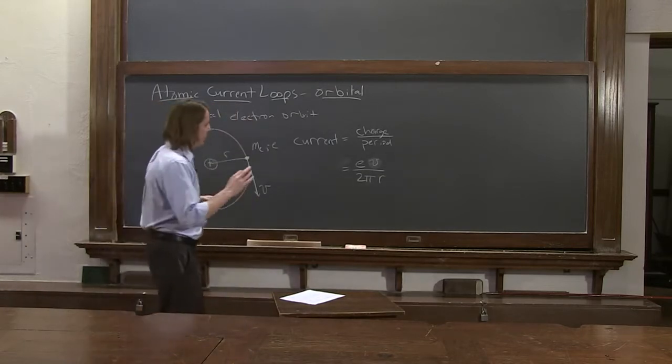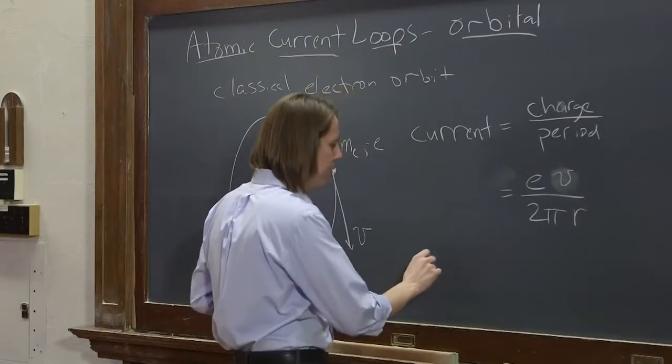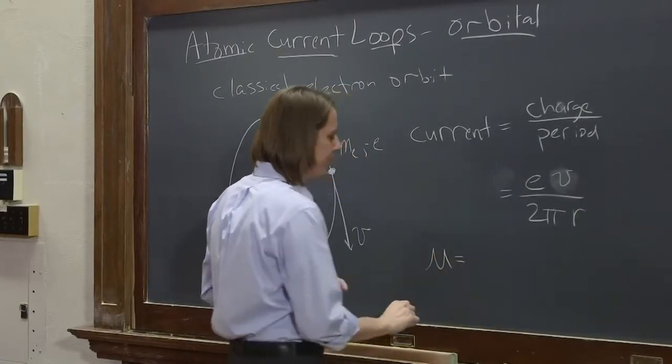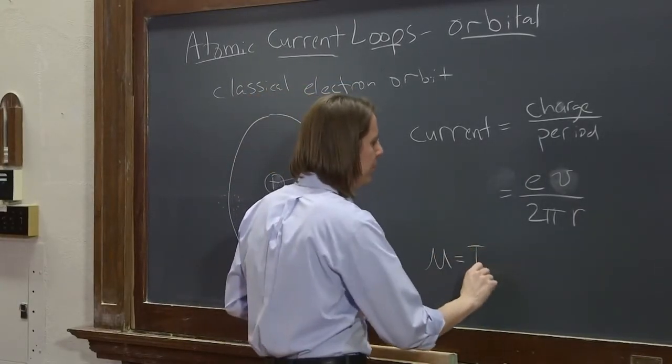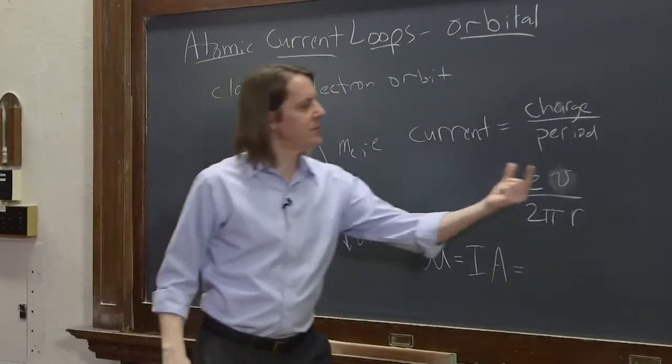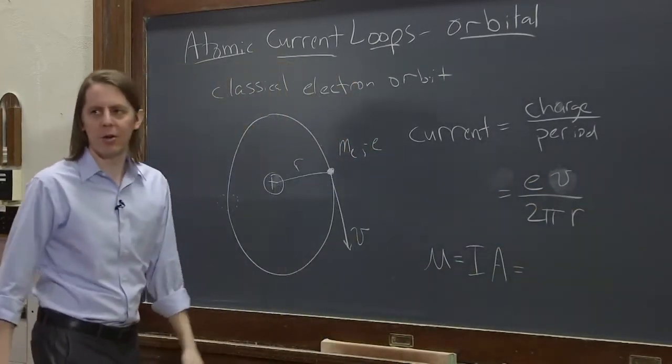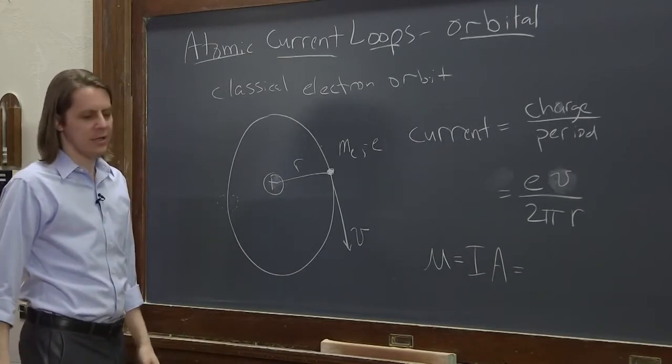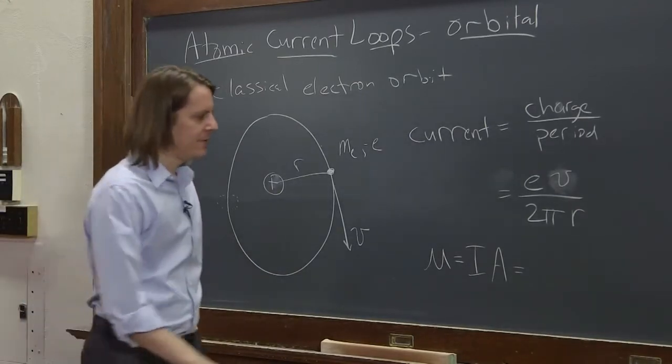But then you remember that what we care about in magnetism is not the current, but the magnetic moment. The magnetic moment was the current times the area. So if we multiply this times by pi R squared,